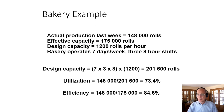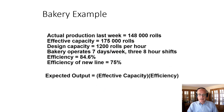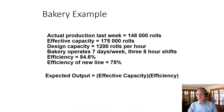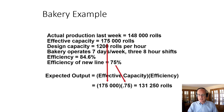These are two very quick and easy numbers to calculate. Expected output is effective capacity times efficiency — that's what we expect to produce in the next week. So 175,000 × 0.75 is the efficiency of the new line, giving us 131,000. That is our expected output given the changes we made in efficiency within the new line.